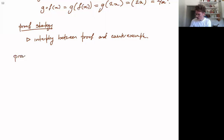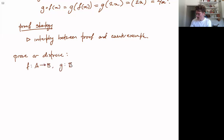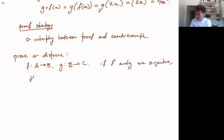So, prove or disprove: let's say we have functions f from A to B and g from B to C, so we can define their composition. If f and g are both surjective, then the composition g∘f is surjective. Is this true? Can we prove this or can we disprove it?